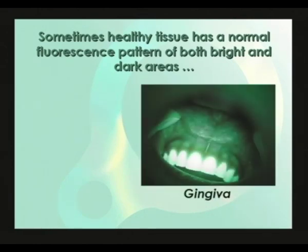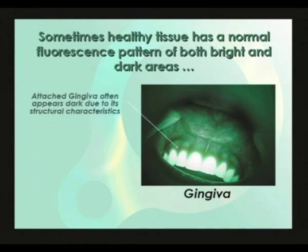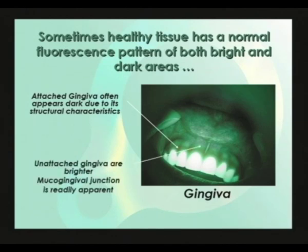Some oral mucosa appear homogeneously dark under Velscope due to their structural characteristics. A good example is the attached gingiva, which, while having a typically light pink appearance in white light, appears dark under Velscope. The unattached gingiva immediately adjacent to the attached gingiva have a brighter appearance more typical of other mucosal tissues, making the mucogingival junction readily apparent under Velscope. The theme of symmetry and bilateral presentation is again evident here — this principle is one of the keys to helping us decide what belongs and what doesn't.